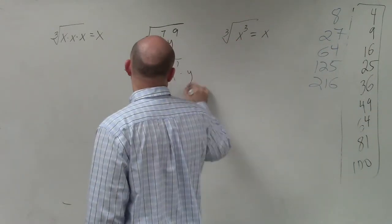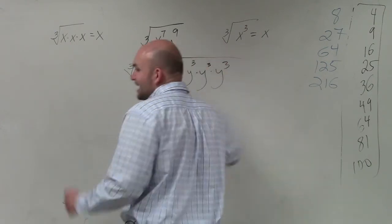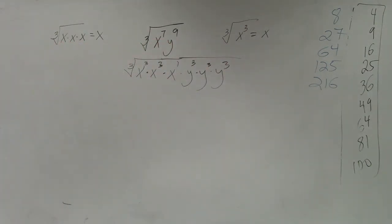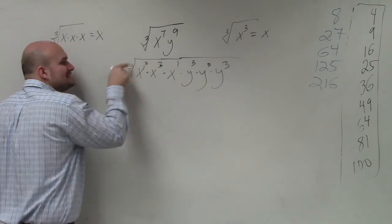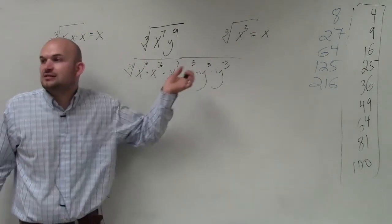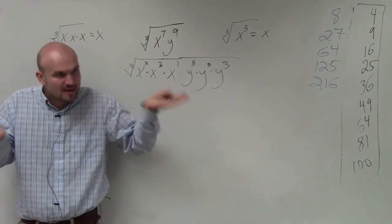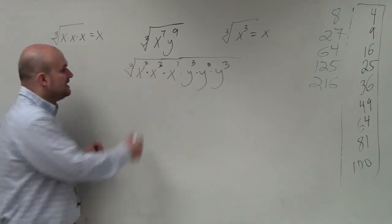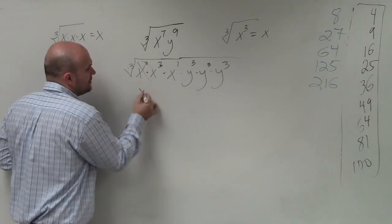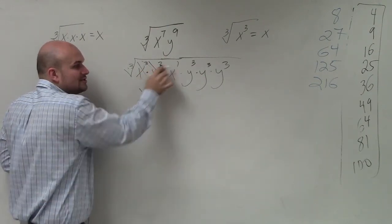And then here, this is y to the third times y to the third times y to the third. My mathematical thinking is that I'm trying to write as many variables with the power that's the same as the index. Because as long as I can write them with the power equal to the index, they undo each other — remember we talked about inverse operations? So as long as the index is the same as the power, these undo each other. That equals x. That equals x. I can't undo the cube root of x, so that's going to remain under the radical.